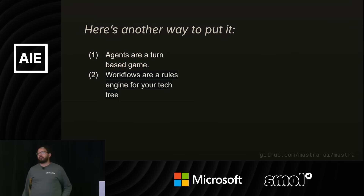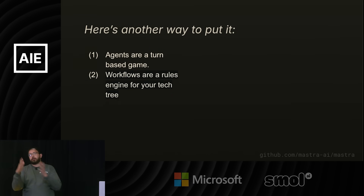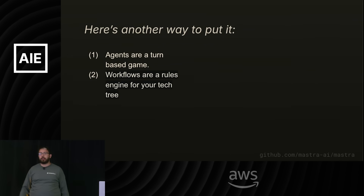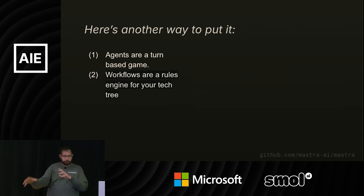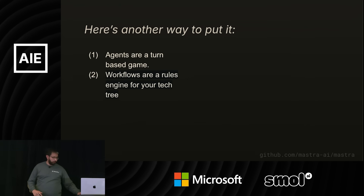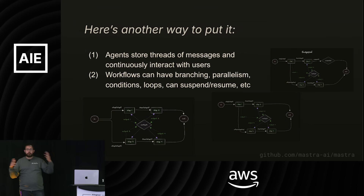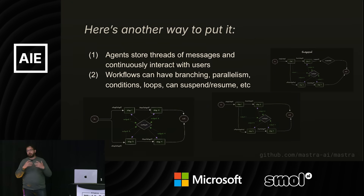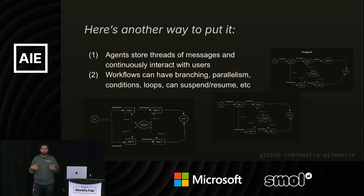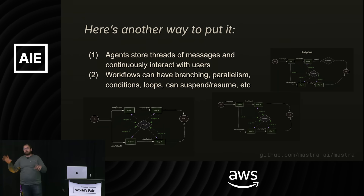I think about workflows like a rules engine for your tech tree. I played Civ a lot as a kid — you've got to discover bronze working before you can research iron working, you've got to get metallurgy before you can research gunpowder. There's a dependency chain, and it's important to track those dependencies because you can't do step B until you do step A. A lot of workflows are these data pipelines: step A, step B, step C, step D, step E — execute them all in order. Conversations have threads, you can have memory — those are emergent properties of lots of messages. Similarly, from dependencies you get branching, parallelism, conditions, loops, suspending, resuming, replaying — those are the emergent properties of workflows.